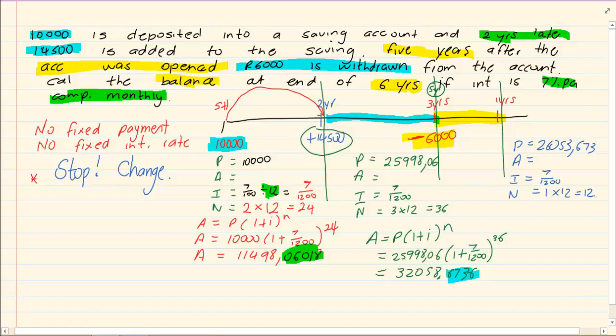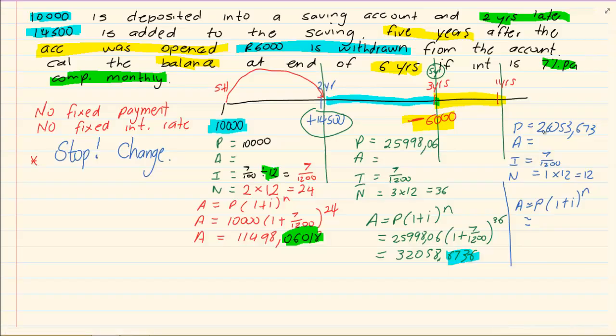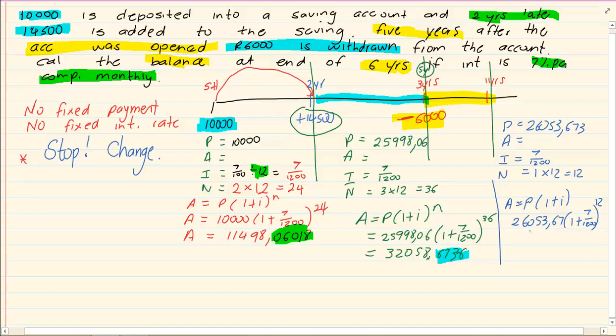Now we go back to our formula. You are going to use this P. But remember again it is on your calculator. So what do we have? We have 26,053 Rand, open brackets 1 plus 7 over 1,200 to the power of 12.